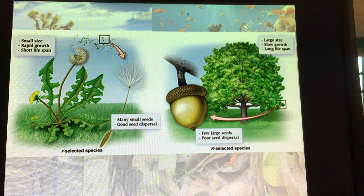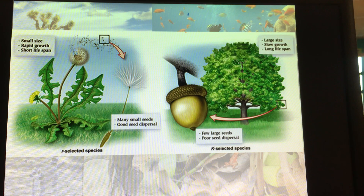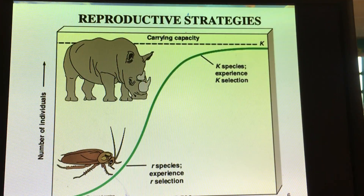Looking at two plants as examples: the dandelion is an R-selected species — it invests a lot of energy and resources into producing many seeds, with the hopes that some land in good places and grow into new plants. Whereas the acorn is a K-selected plant — a lot of photosynthesis went into building that one acorn, so there is high parental investment in the hopes that it actually survives and grows into a tree.